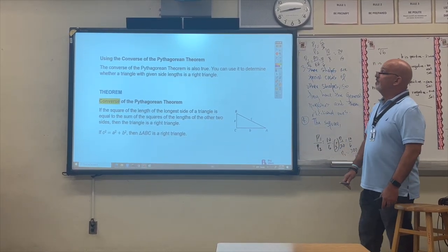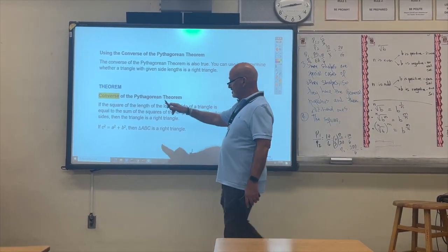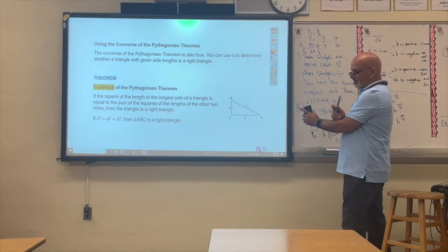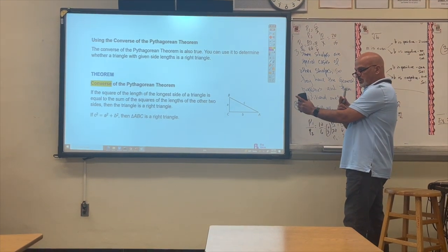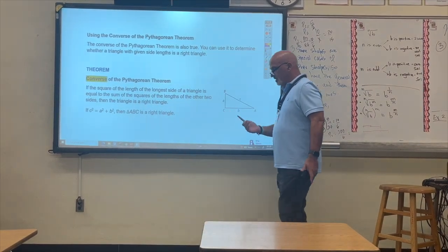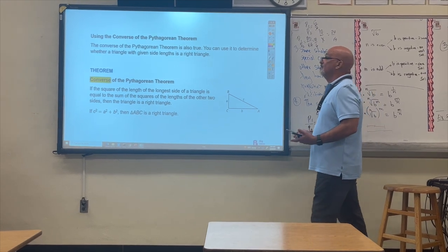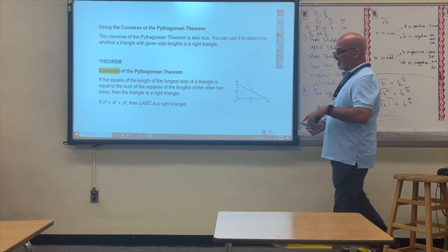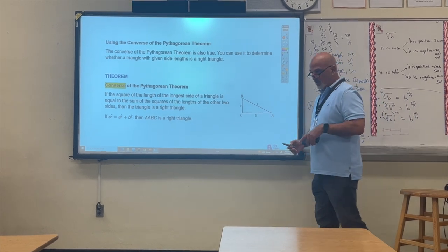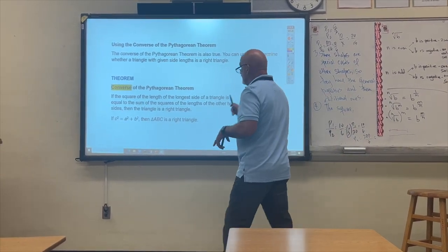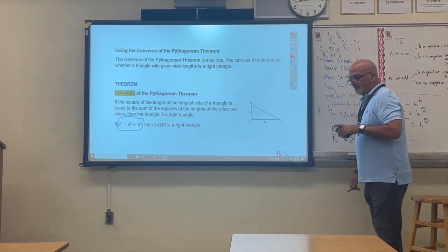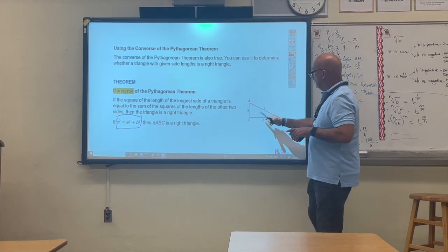Second objective: the converse of the Pythagorean theorem. A converse is a logical statement in which we switch the conclusion and hypothesis of the original theorem. So the converse says: if the square of the length of the longest side of a triangle is equal to the sum of the squares of the two other sides, then the triangle is right. If the three sides satisfy the Pythagorean theorem, you can say the triangle is a right triangle.